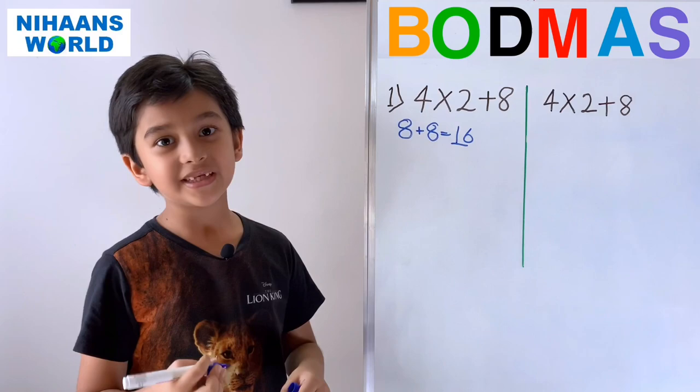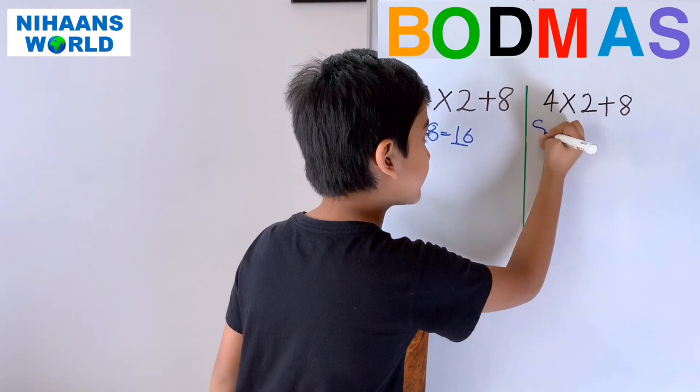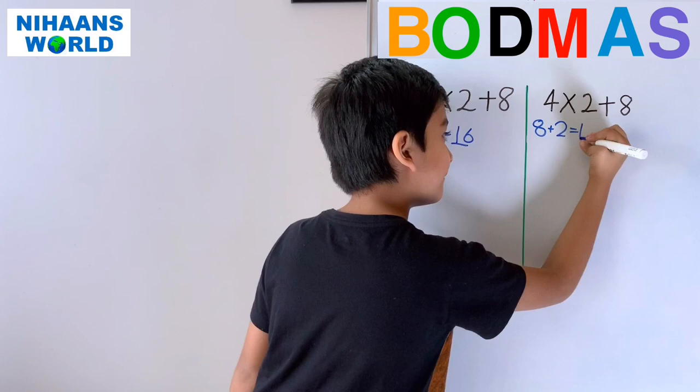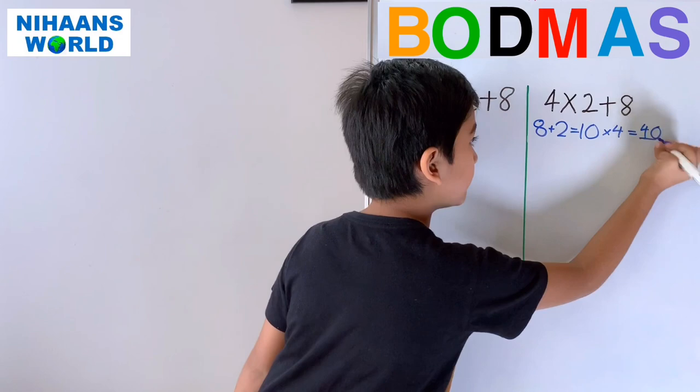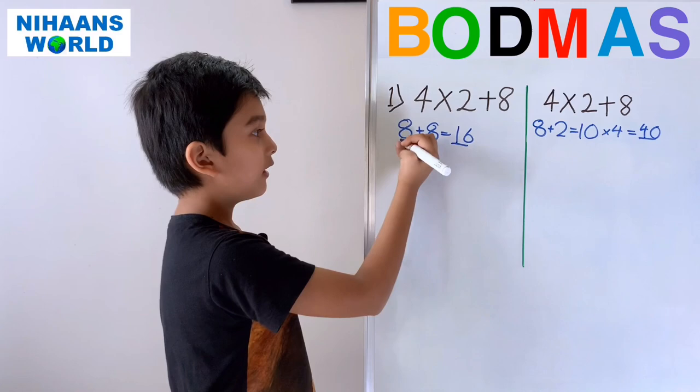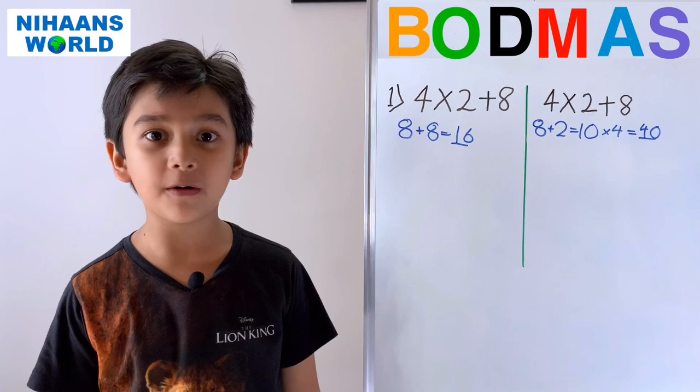So now what if I change the way, maybe this side? So what is 8 plus 2? 8 plus 2 is equal to 10. And what is 10 multiplied by 4? 40. So now we have to check which is the correct answer. First we have to do multiplication, only then addition. According to BODMAS, multiplication comes before addition.